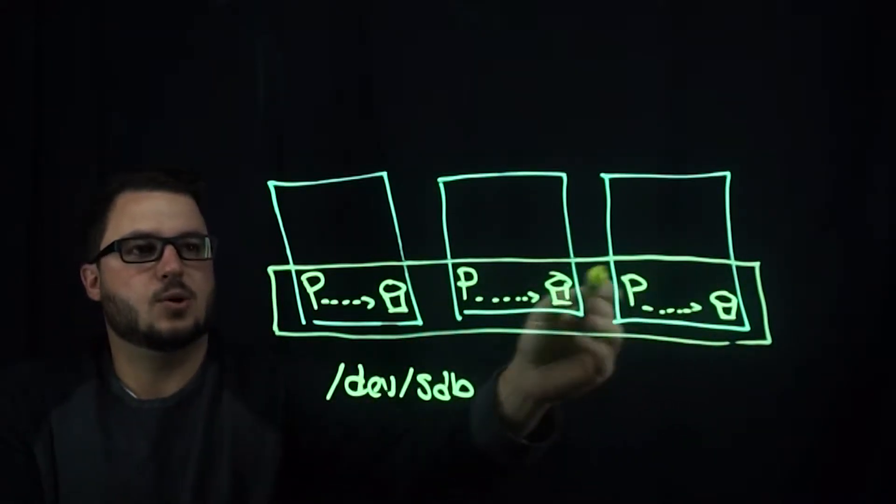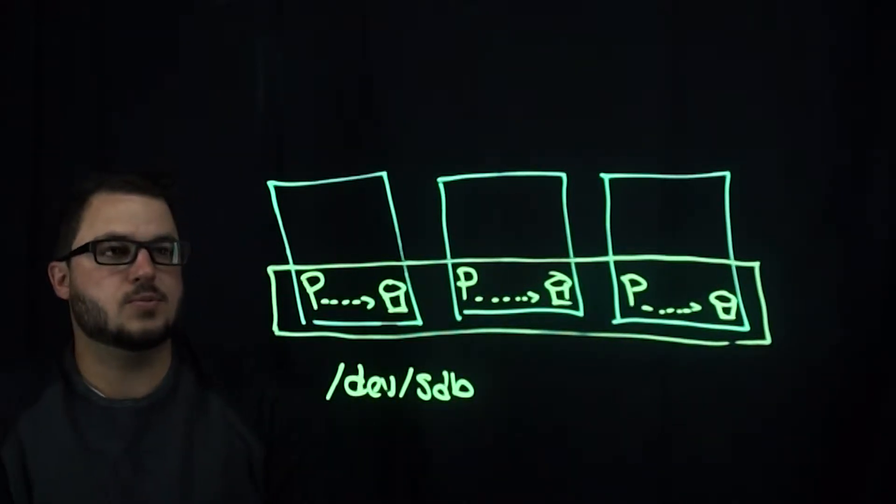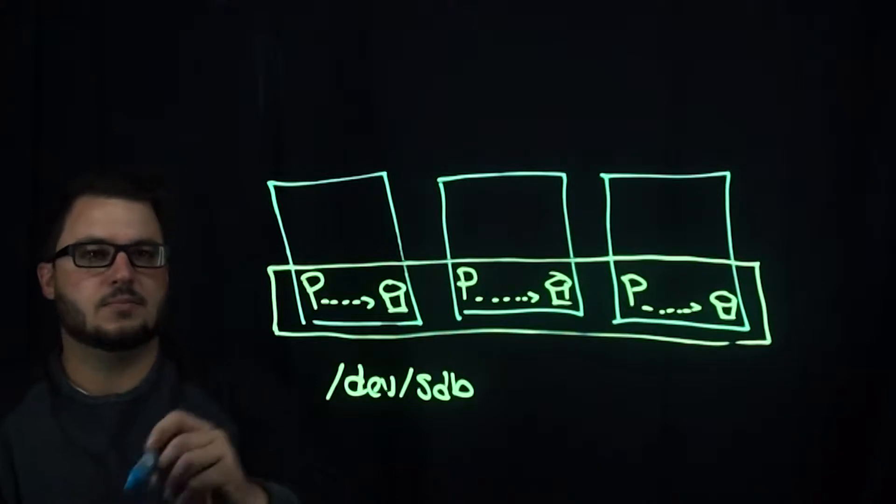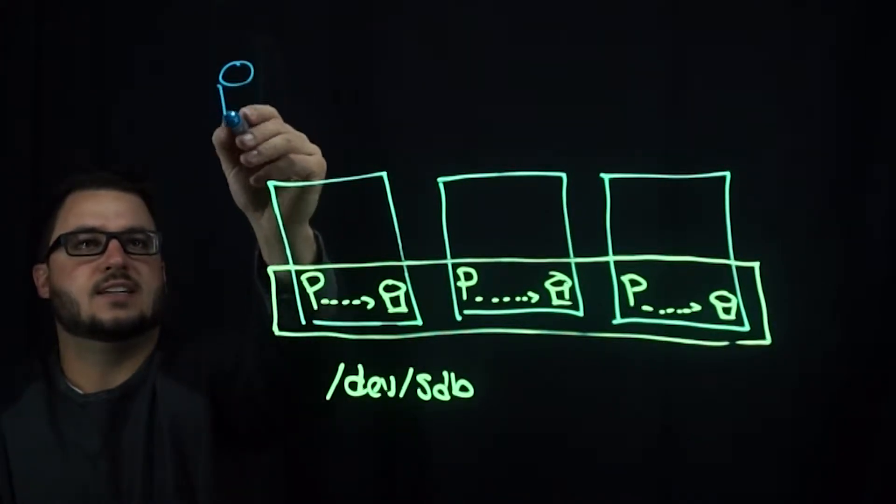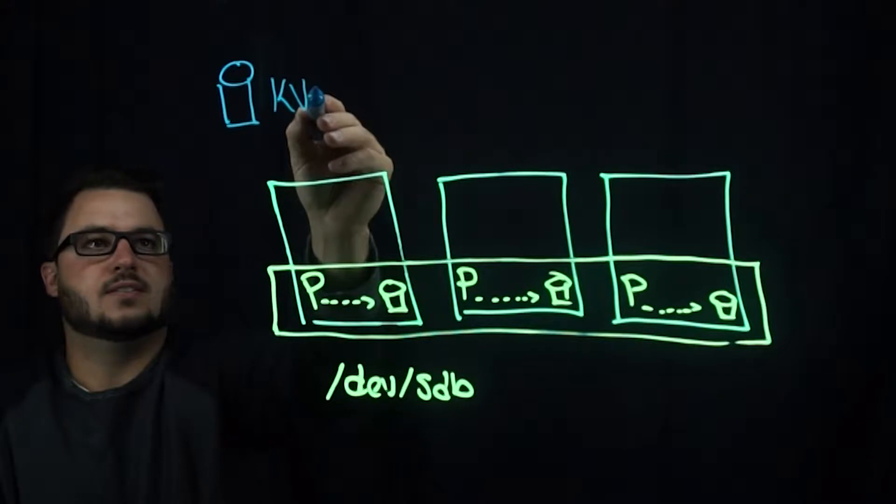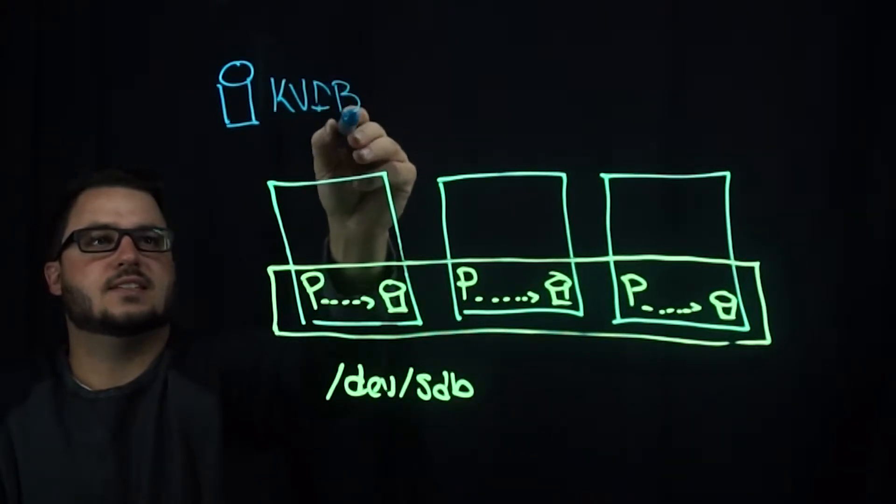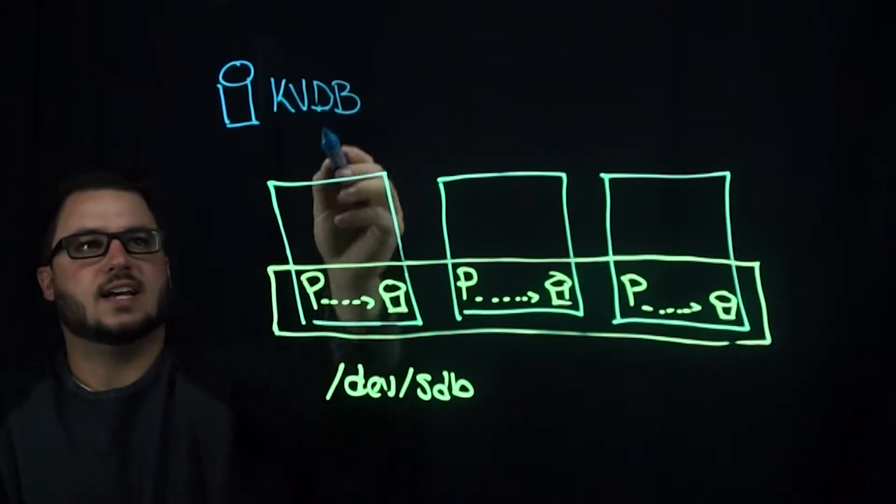Now, this is a globally accessible pool to every single node. And before we get into how applications use it, Portworx also needs a key value store. Typically, this is something like etcd.